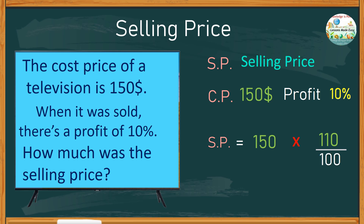We can simplify by canceling the two zeros above and the two zeros below. Now we only need to multiply 15 times 11, which gives us 165. Therefore, the selling price is 165 dollars. If you bought a television for 150 dollars, selling it at 165 dollars gives you a 10% profit.